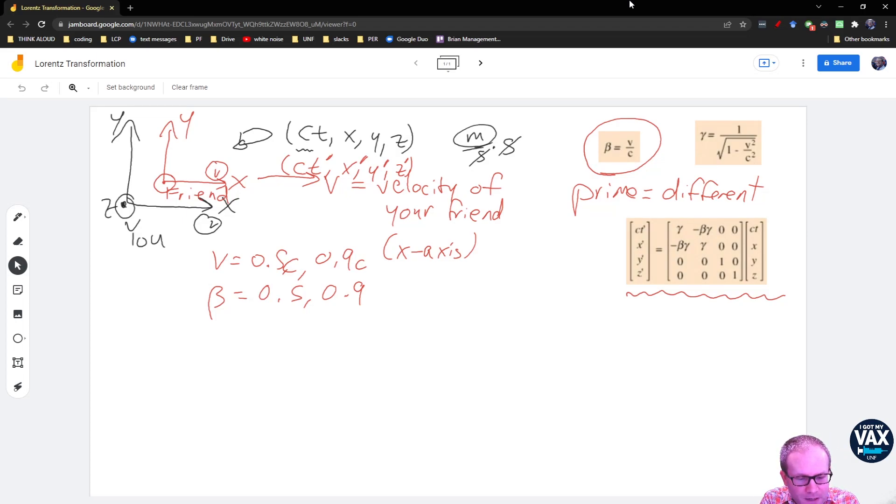Gamma is the other thing we need to introduce. This is the Lorentz factor. This is a measure of how relativistic the system is. You might notice that beta is showing up there. Another way to write gamma is that it's 1 over square root 1 minus beta squared. And so when you think about this Lorentz factor, you want to think about two extremes.